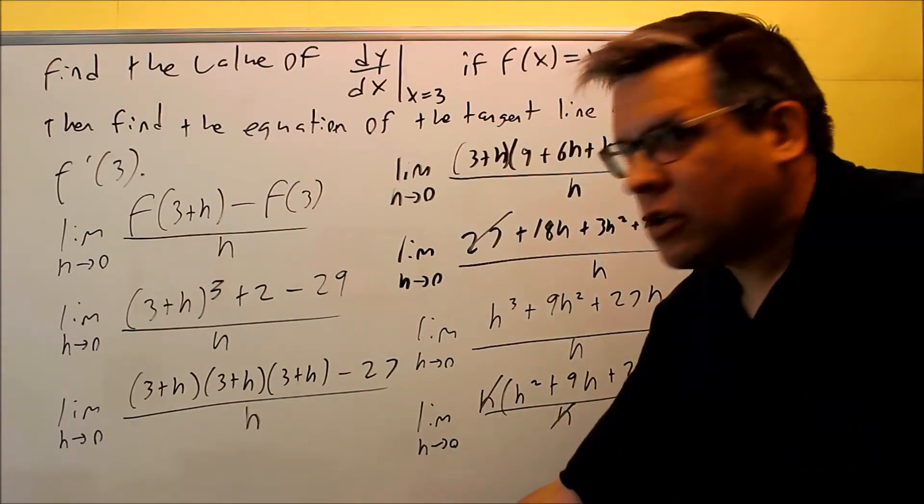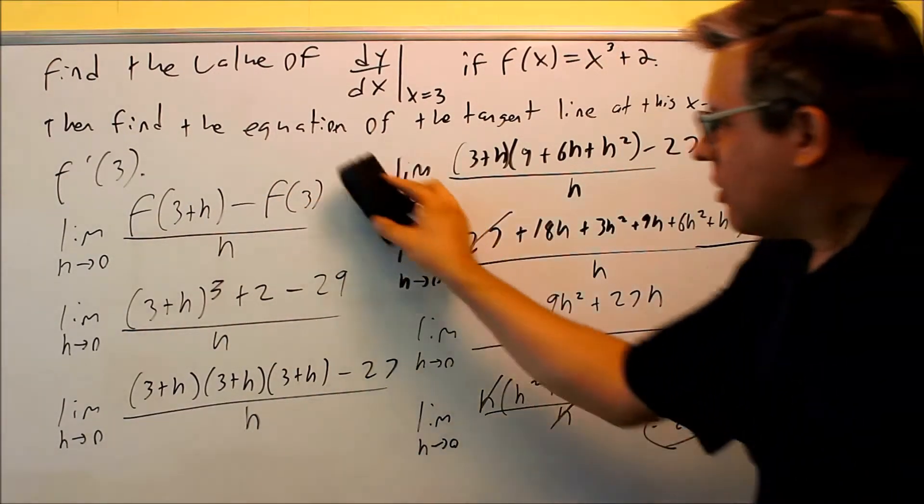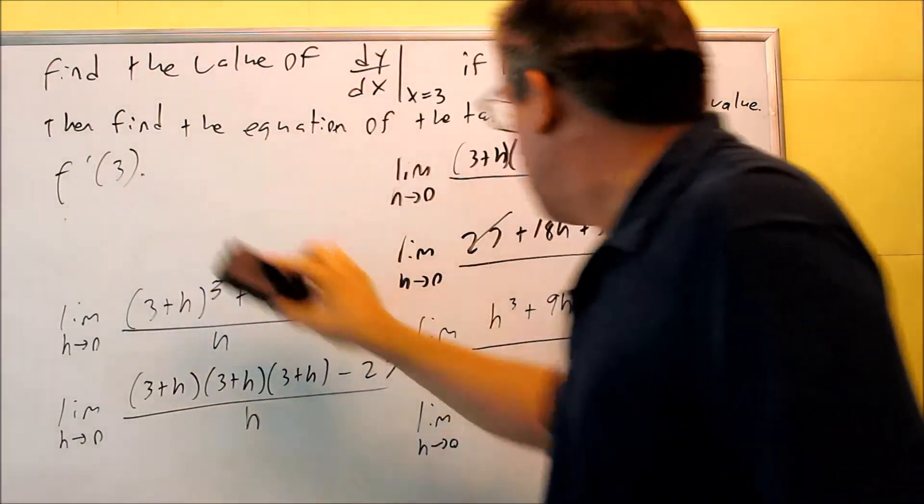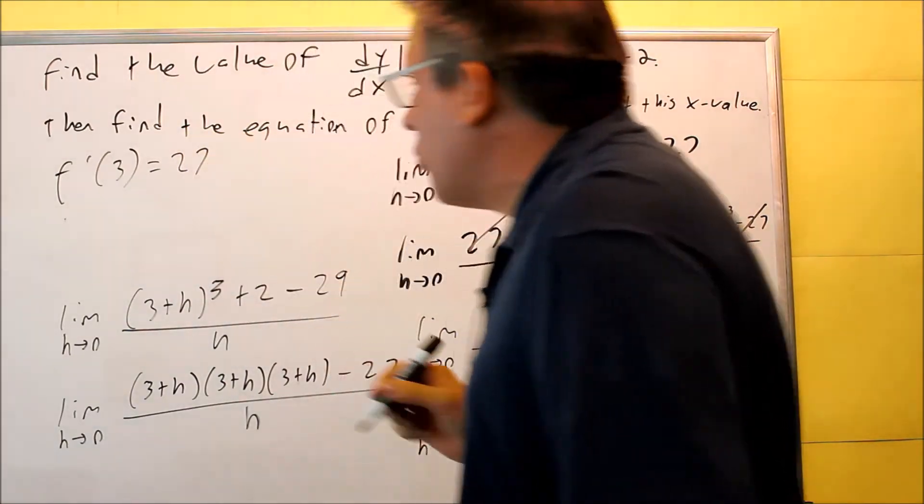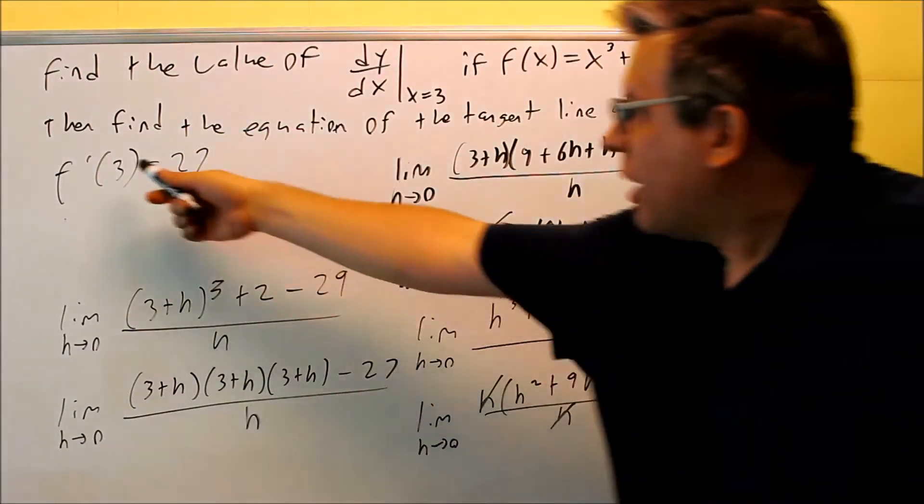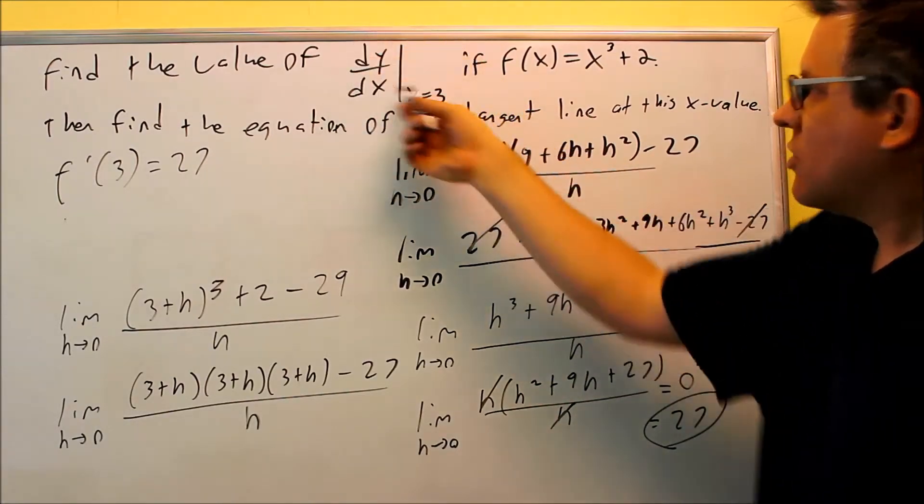That's the value of dy/dx, so let's go ahead and write that out. I can even use this notation, f prime of 3. So if I write that out, f prime of 3, you have time to write that, otherwise you can stop and rewind the video here. f prime of 3 is equal to 27. That's exactly the same notation as this right here.